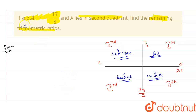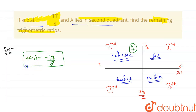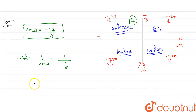The question says sec A is given and A lies in the second quadrant. Now, cos A is the reciprocal of sec A, so cos A equals 1 upon sec A, which is 1 upon (minus 17 by 8), giving us cos A equals minus 8 by 17. The negative sign is because A is in the second quadrant, where cos is negative.